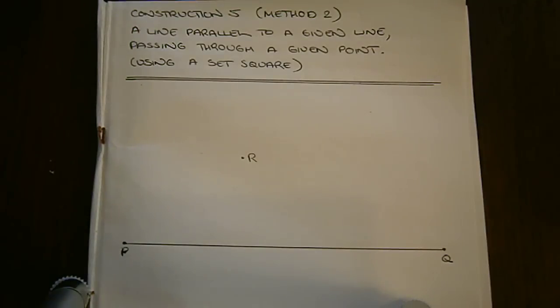Construction 5, Method 2: to draw a line parallel to a given line passing through a given point. This time we'll be using a set square.